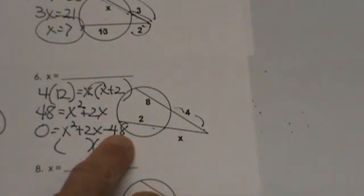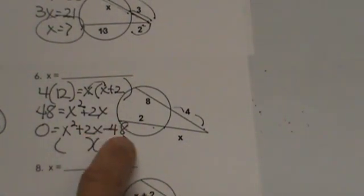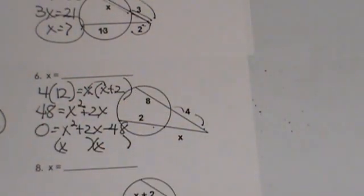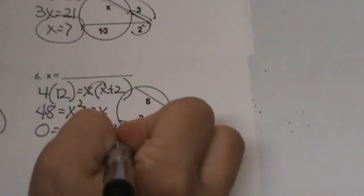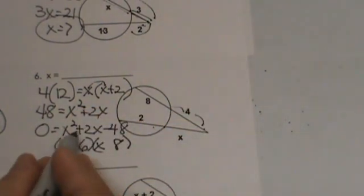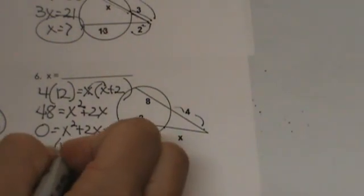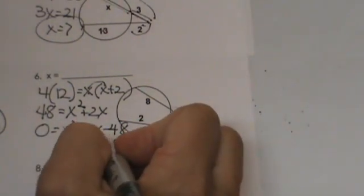Do you remember trinomial factors? What multiplies to 48 that has a difference of 2? What factors multiply to 48 but have a difference of 2? That is 6 and 8. We need the combination to add to a positive 2. That means it has to be a negative 6 and a positive 8.